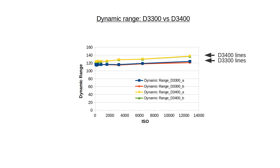But what about dynamic range? These experiments were repeated twice for each camera as well. Both D3400 lines are higher than either of the D3300 lines, suggesting that the D3400 has better dynamic range.